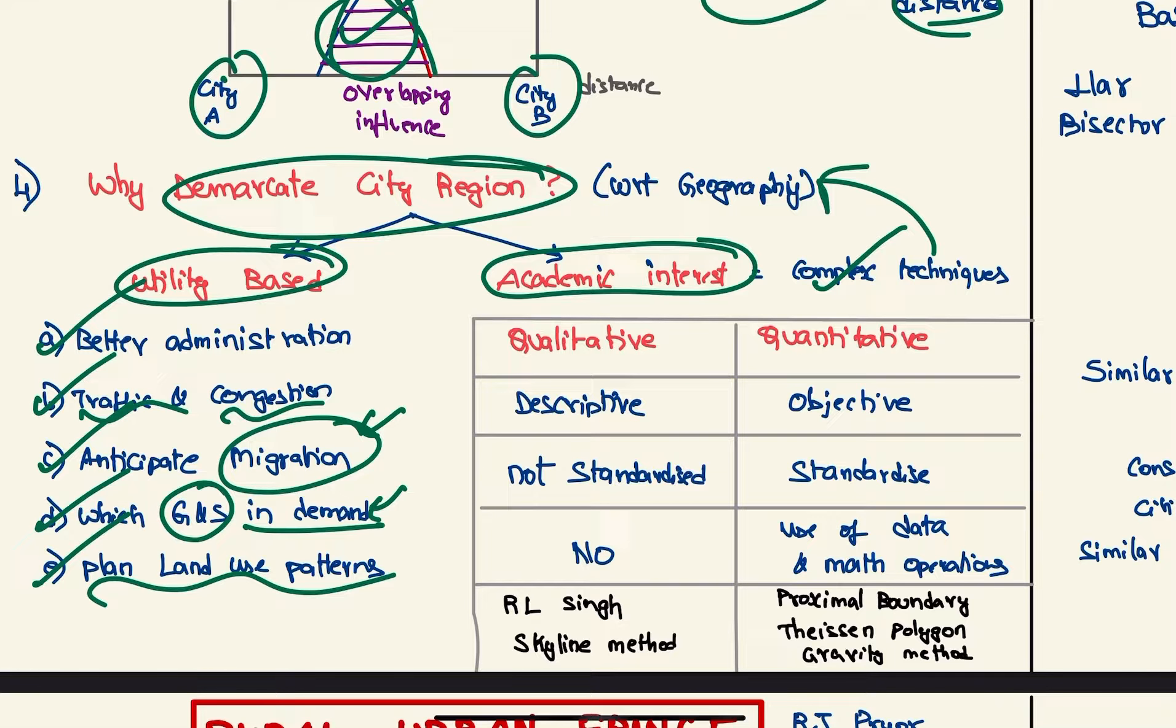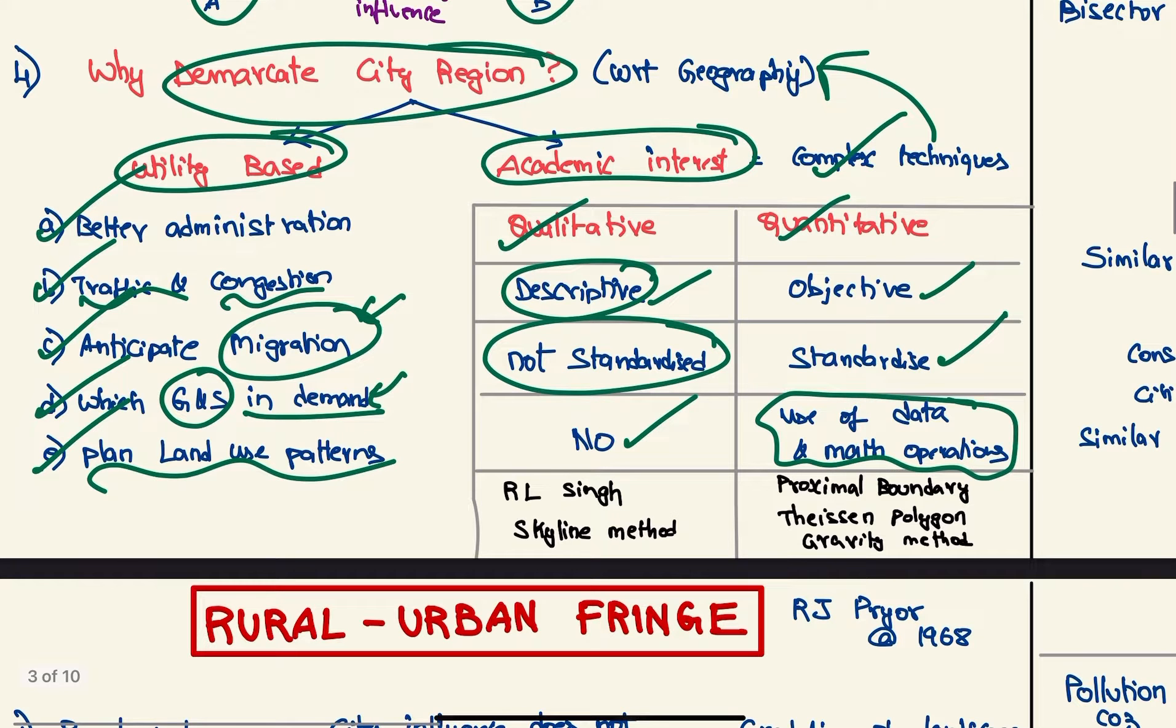So we have two types of methods: qualitative and quantitative. These are descriptive and subjective; these are more objective. These are not standardized; since they use data and mathematical operations, they are standardized. They do not use any data and mathematical operations. Examples are R.L. Singh method who uses the skyline method, proximal boundary method, Thiessen polygon, and gravity methods.